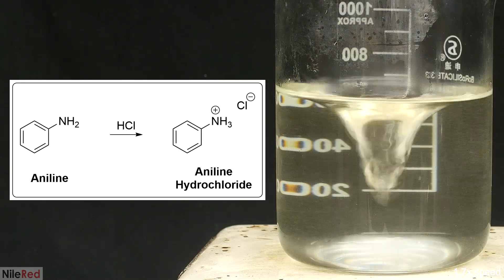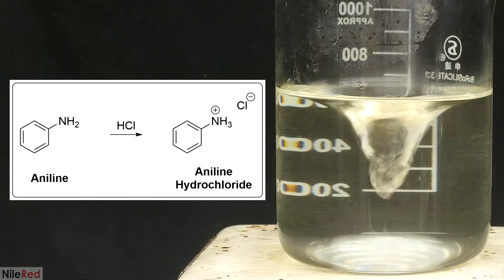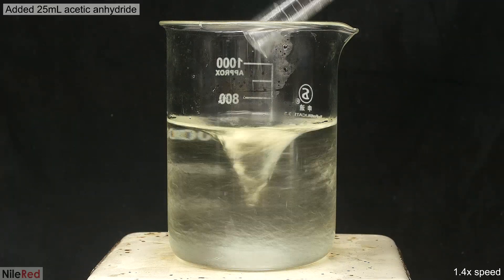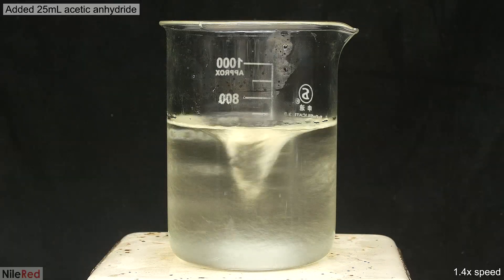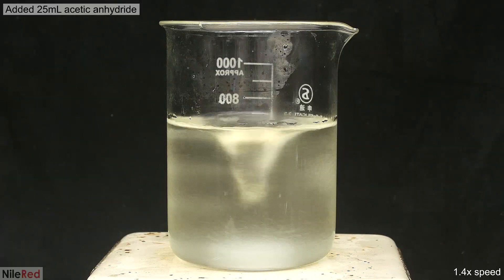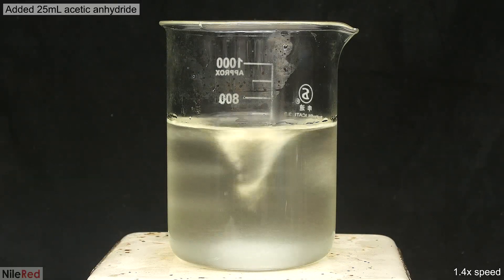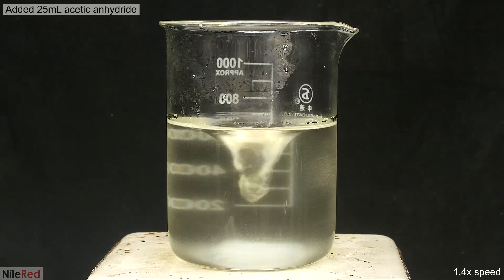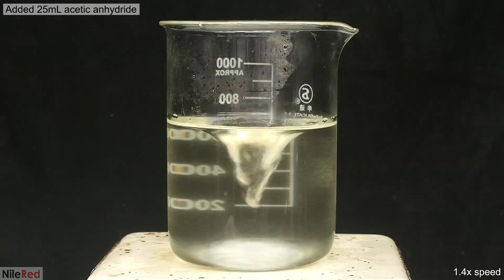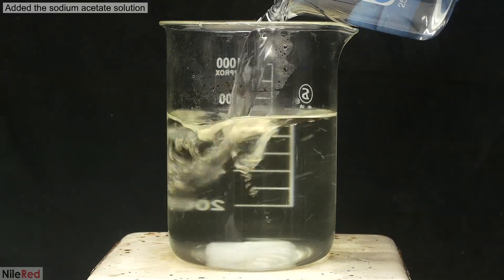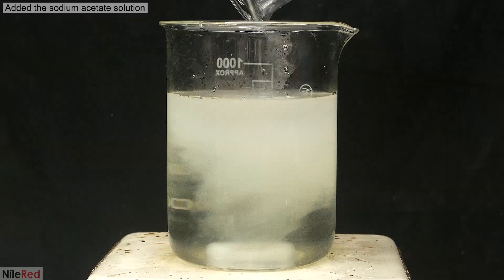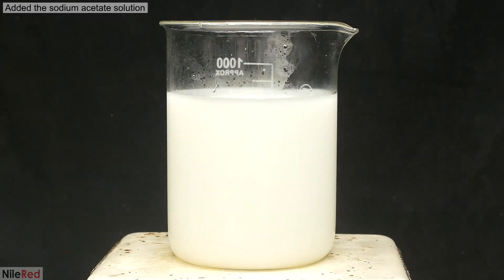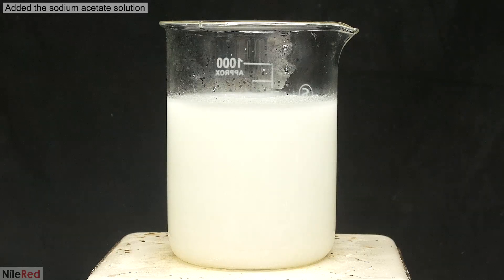When it does, I should be left with a completely clear solution. With everything dissolved, I then dump in the acetic anhydride. The reaction is quite quick, and it's more or less done within 30 seconds. However, nothing precipitates out, and all of the product is still dissolved in the solution. To get it out, I dump in the sodium acetate solution from earlier. Almost immediately, a whole bunch of acetanilide falls out of solution.